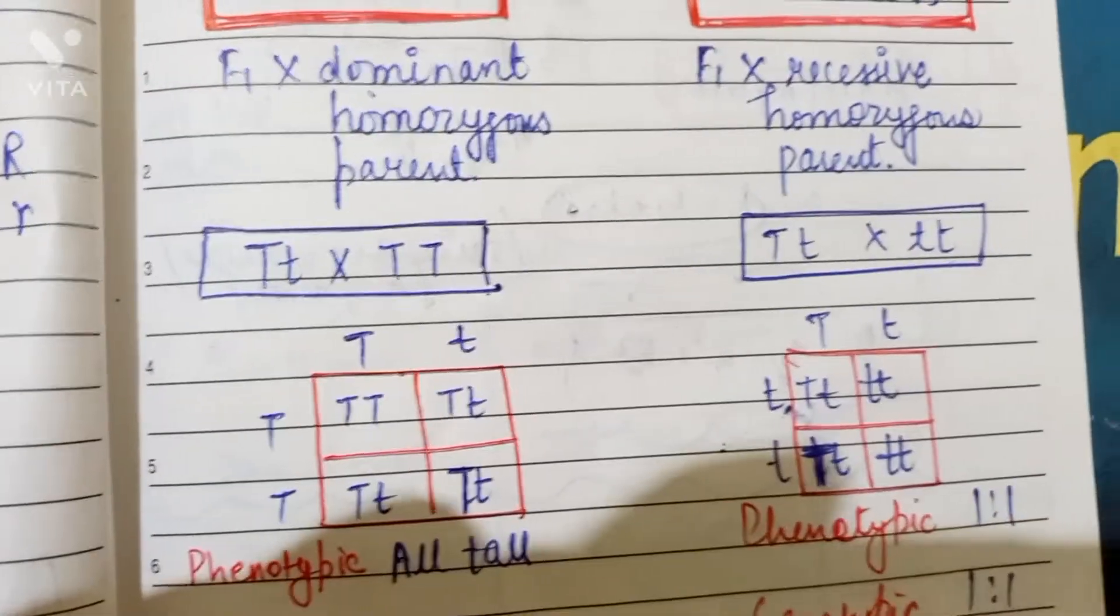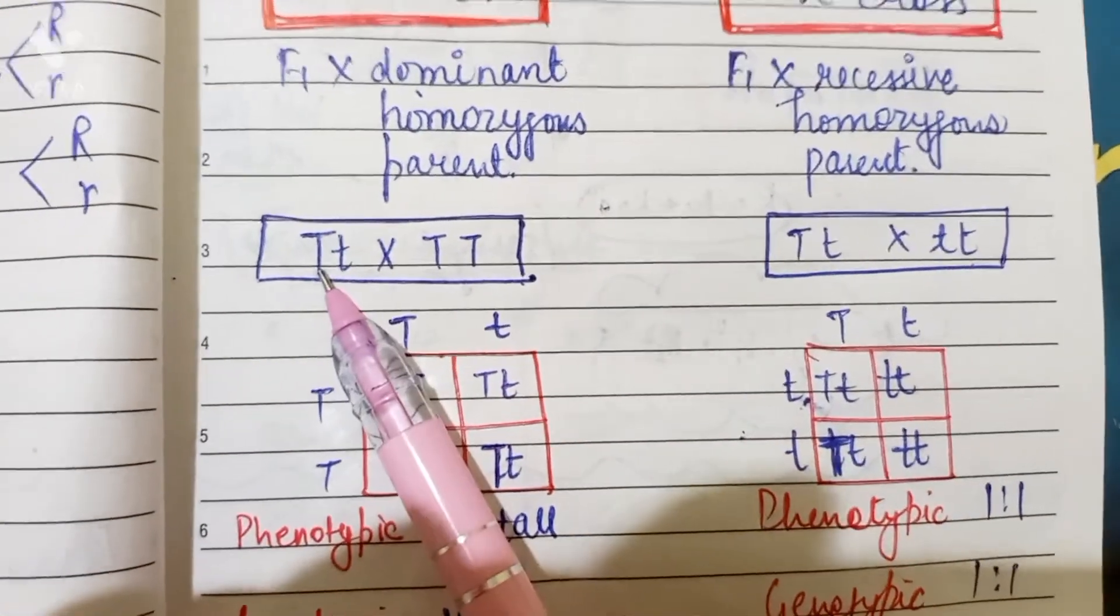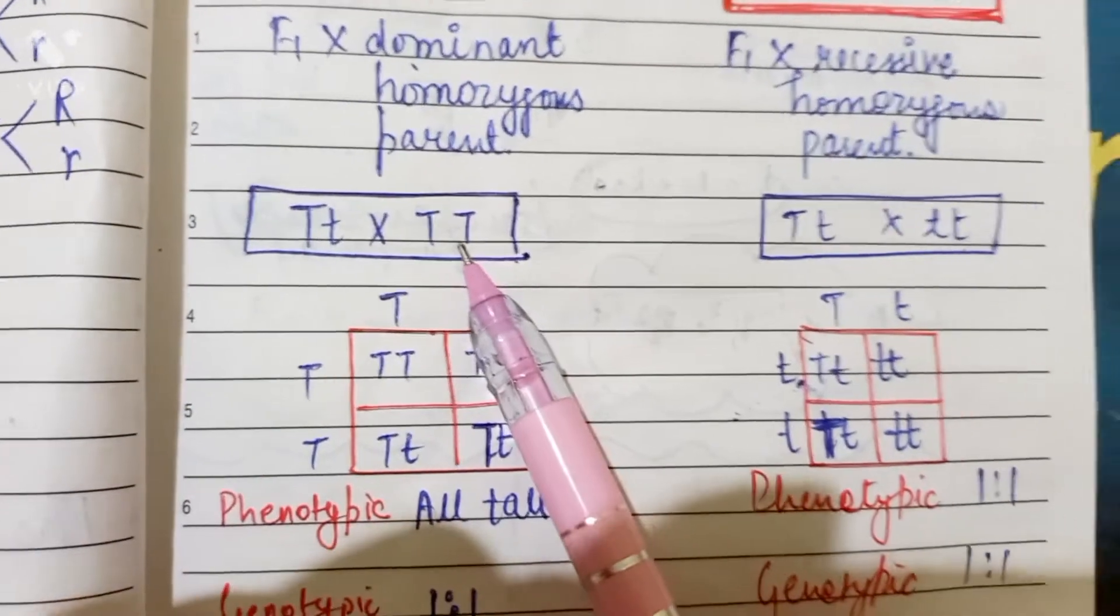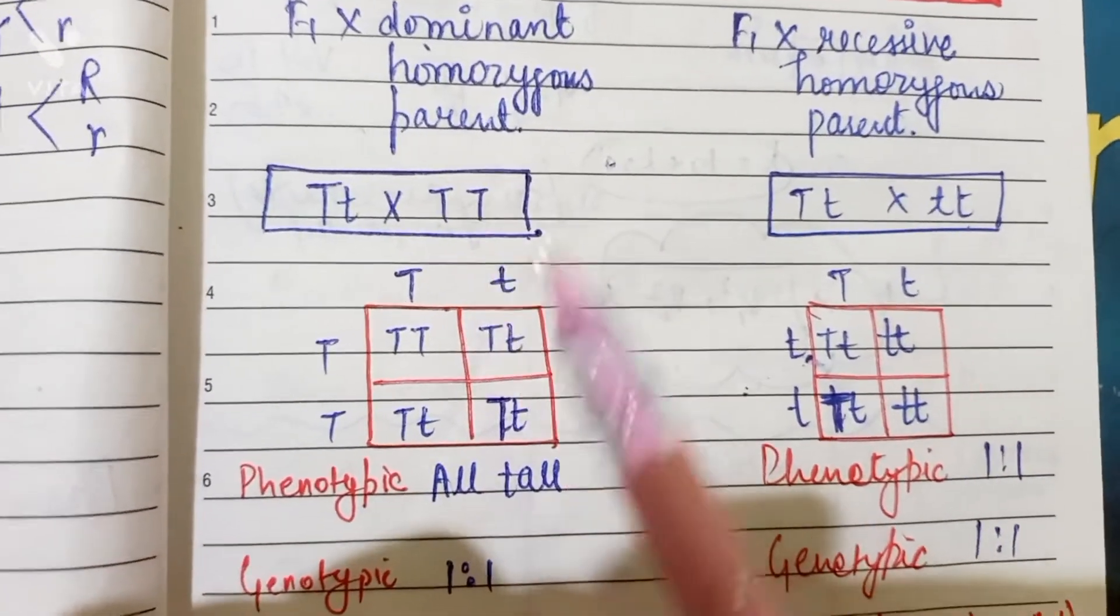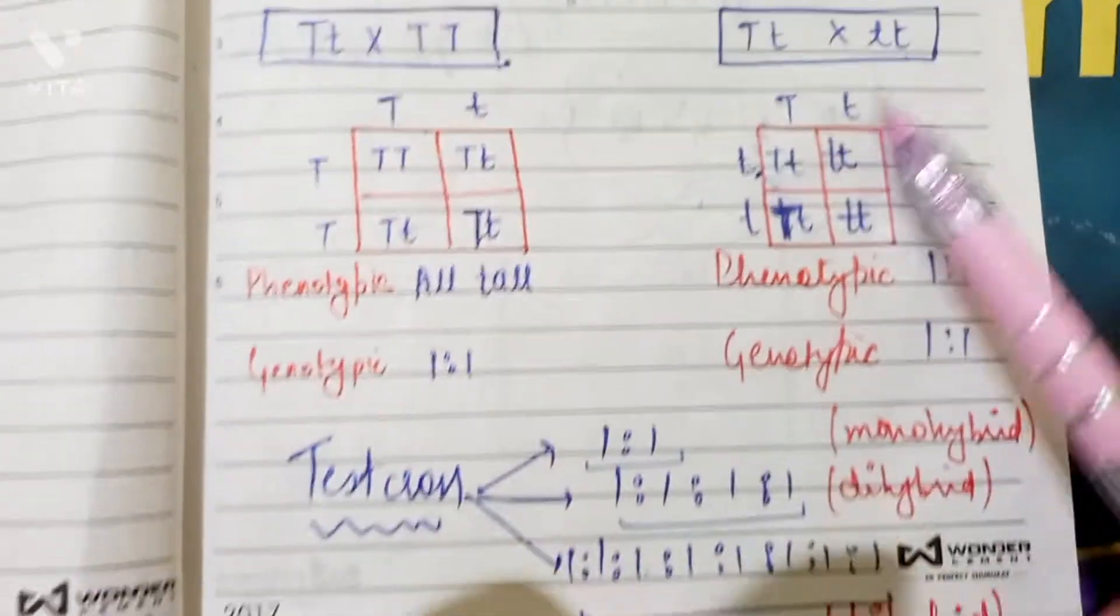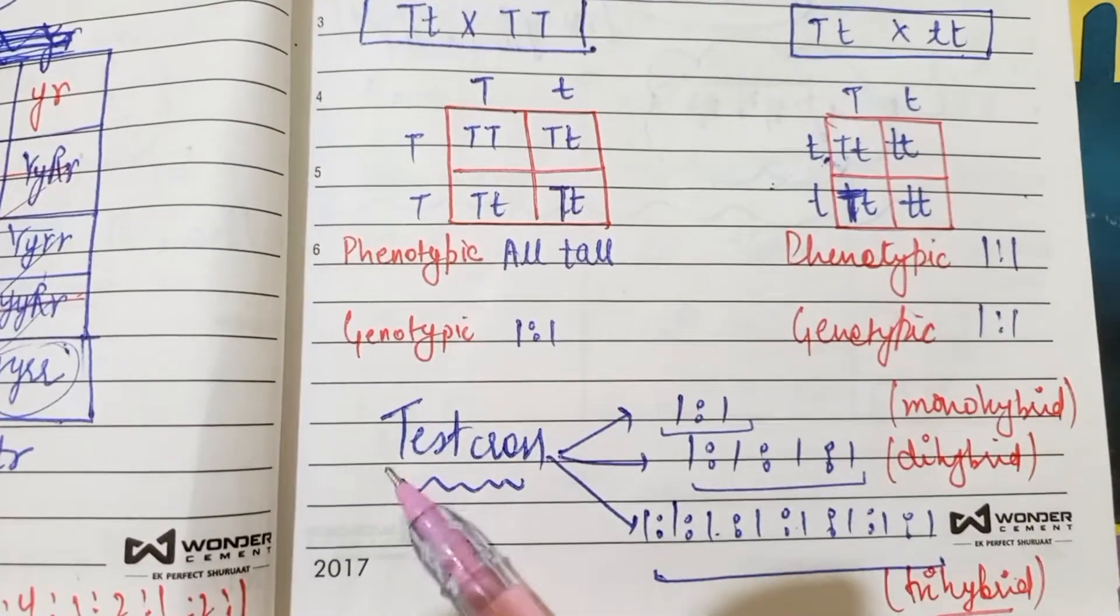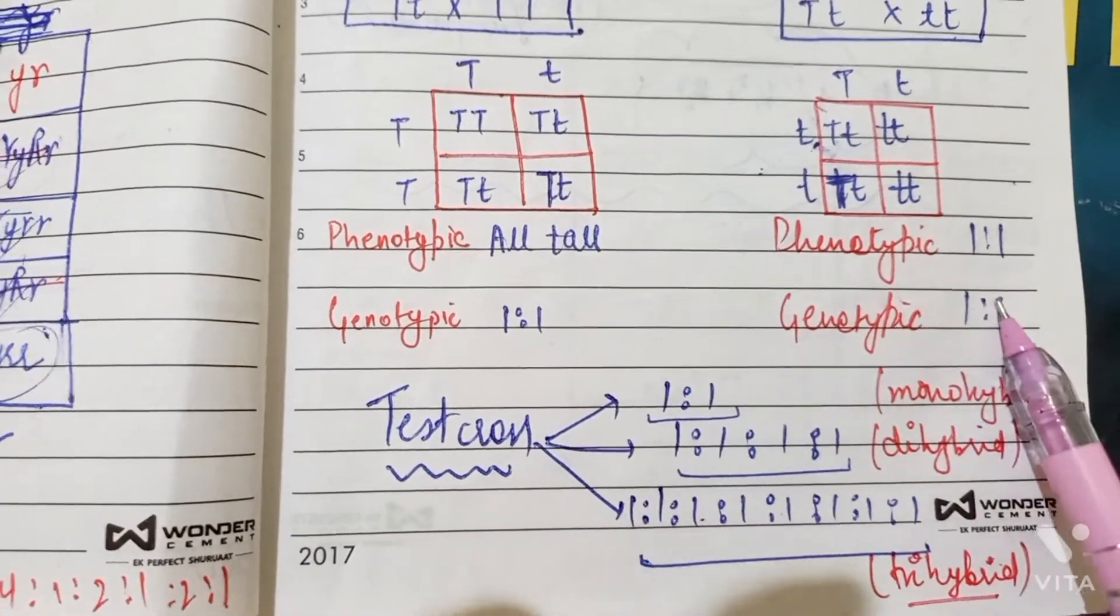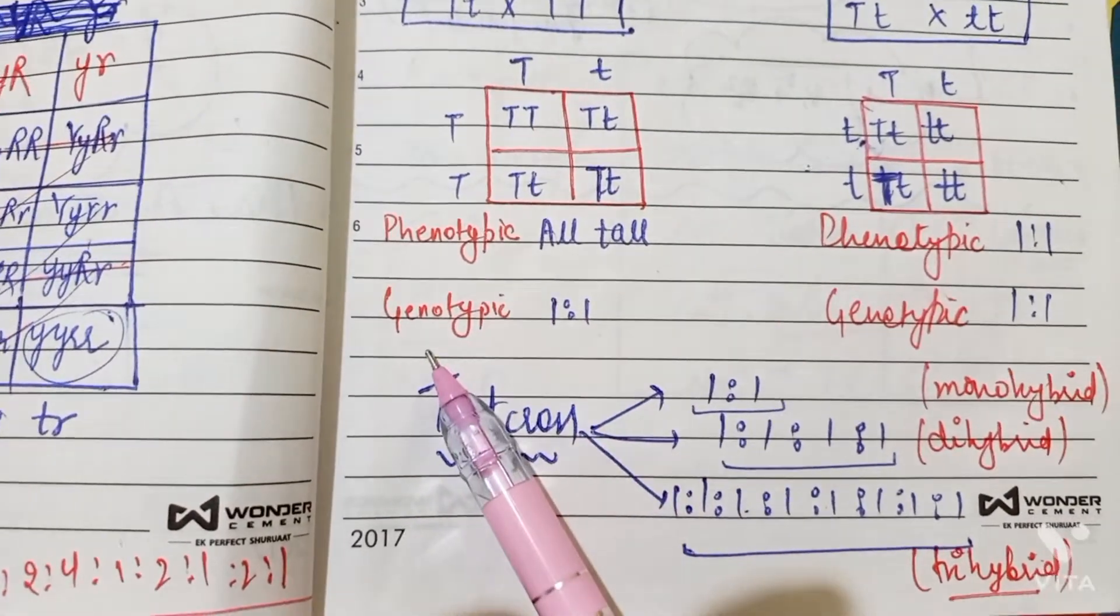Here you can see it is the first filial generation, then it is crossed with homozygous parent that is dominant, and here it is crossed with homozygous recessive parent. Here is the cross, and after crossing we will get 1 is to 1 in the phenotypic and the genotypic ratio.